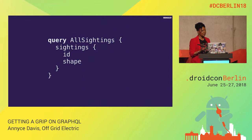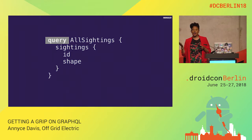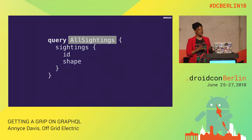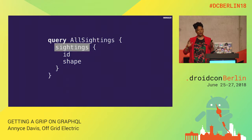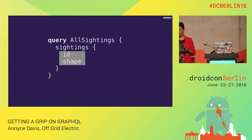The first thing to note is the operation — in this case it's a query, but there are other operations available like mutations as well as subscriptions. There's an operation name, which is used for debugging as well as for certain GraphQL clients that take advantage of this name to generate data for you. And then there's the object or objects you're interested in — in this case, a list of UFO sightings — and on the inside are the fields. Specifically, I only want the ID and the shape of a UFO sighting.